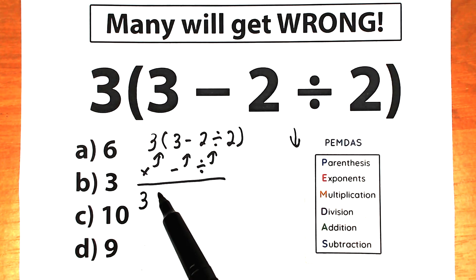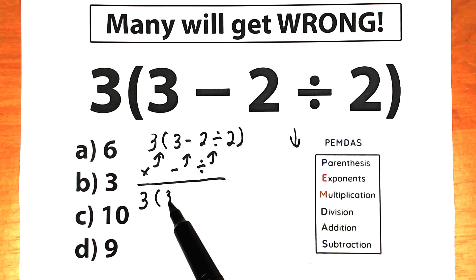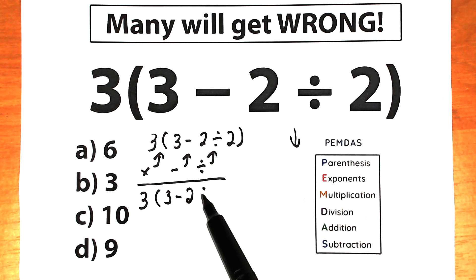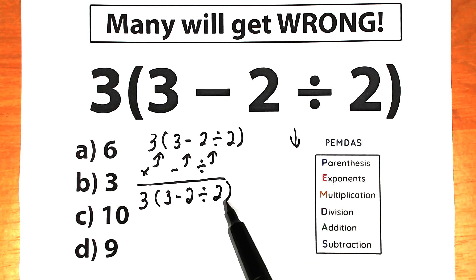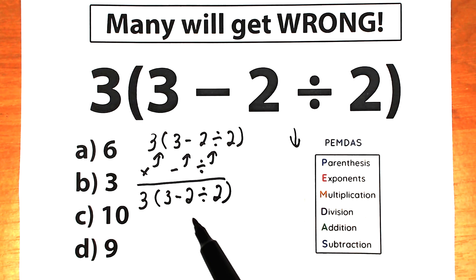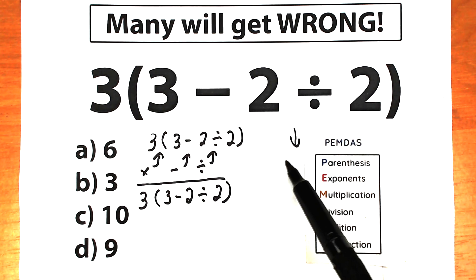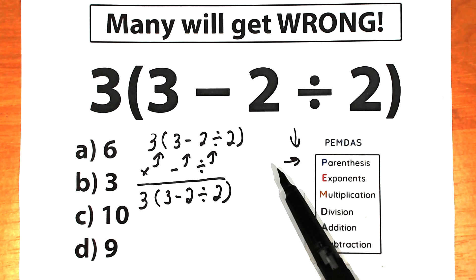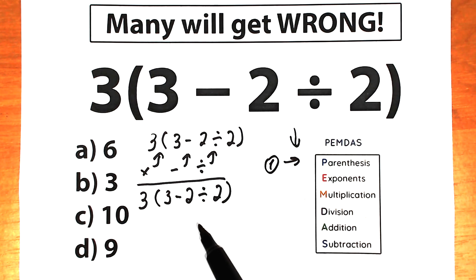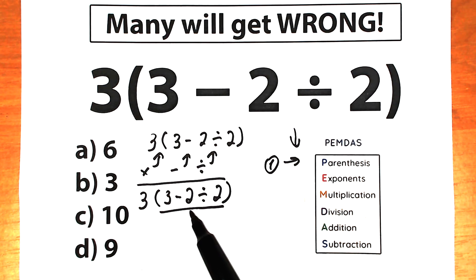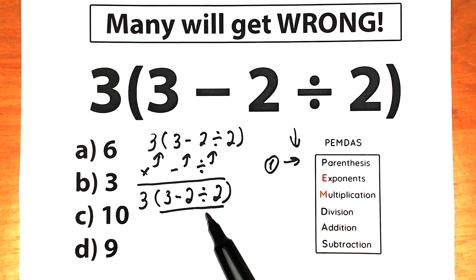So let's solve our challenge according to the PEMDAS order of operations: 3 times 3 minus 2 divided by 2 inside parentheses. What should we do first? We should evaluate the expression inside parentheses, because parentheses has the highest priority. Inside the parentheses we have two signs: a division sign and a subtraction sign. What should we do first — subtract or divide?